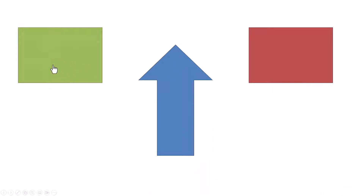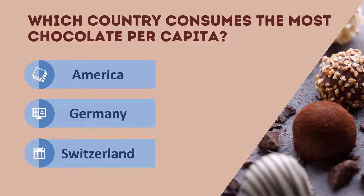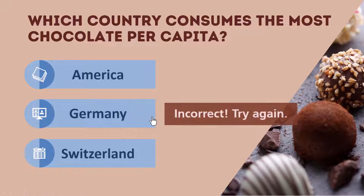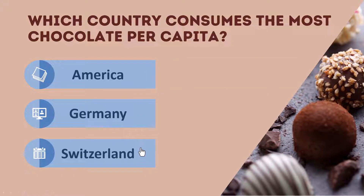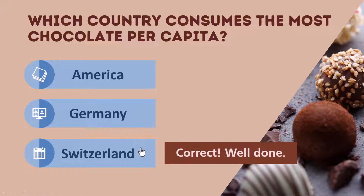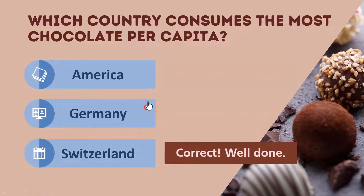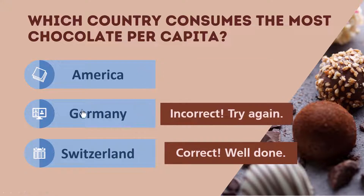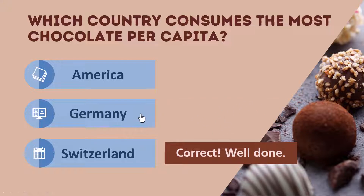Let's preview it — the arrow is hidden, it appears when I click the green box, and disappears when I click the red box. Once you understand this basic concept of interactive triggered animations, you can do some pretty sophisticated things. A few months ago I shared a slide with an interactive quiz: the question is which country consumes the most chocolate per capita. Clicking Germany shows 'Incorrect, try again.' Clicking America also shows 'Incorrect.' Clicking Switzerland finally shows 'Correct, well done!' — and the correct answer stays on the slide.